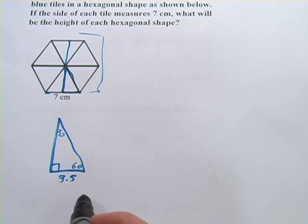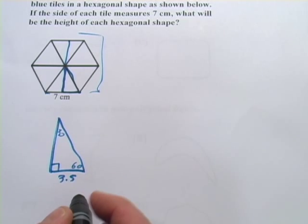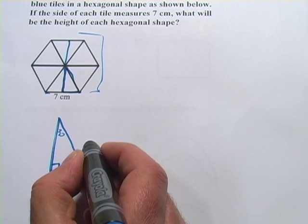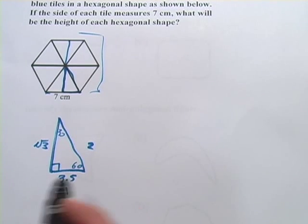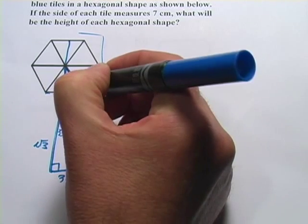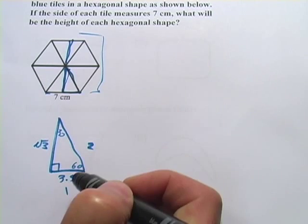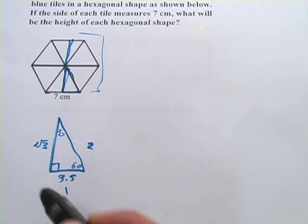And what we have in an equilateral, sorry, in a 30-60-90 triangle, we have sides in the ratio of 1, 2, and square root of 3. And we want to find this square root of 3 side because this right here plus another one just like it is going to add up to the height of this.